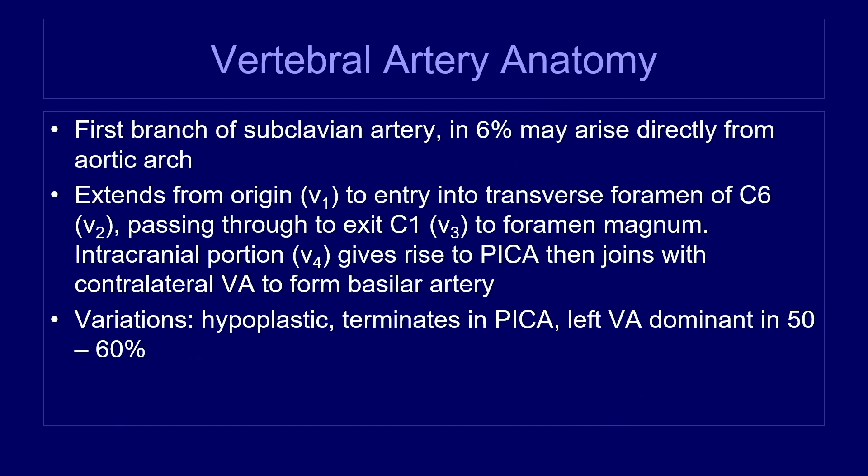We don't image much of the vertebral artery during cerebrovascular imaging — we usually look at it in one place. But it's important to know the overall anatomy above and below the level we're looking at. Most of the time, the vertebral artery arises from the subclavian artery. However, it can also arise directly from the aortic arch, which could potentially change what you see on imaging.